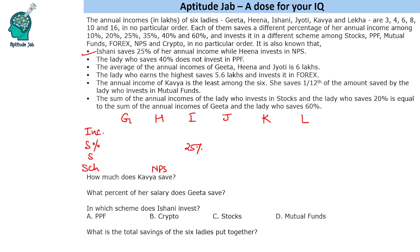The lady who earns the highest saves 5.6 lakhs and invests in forex. The highest income is 16 lakhs. So 5.6 divided by 16 gives 35%. Therefore, the highest earner has a 16 lakh income, saves 35%, and invests in forex.